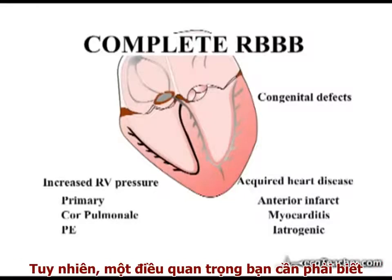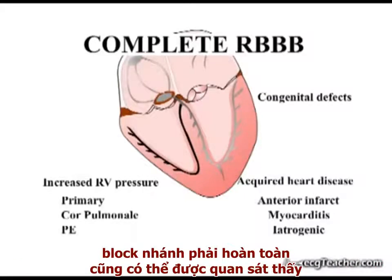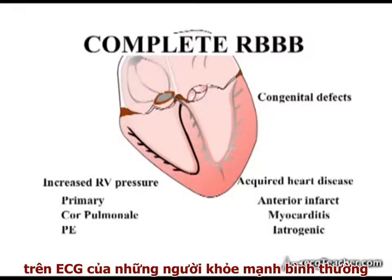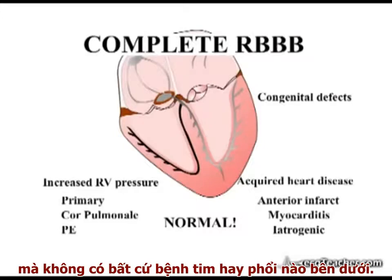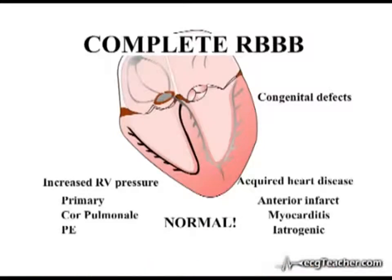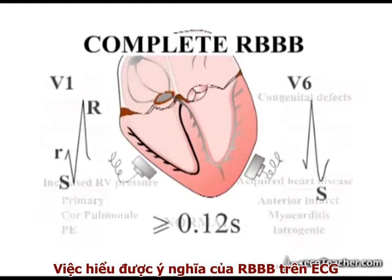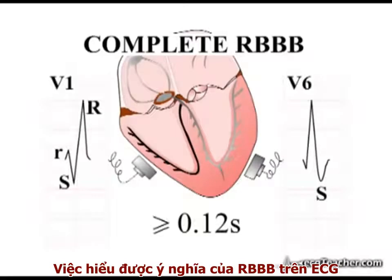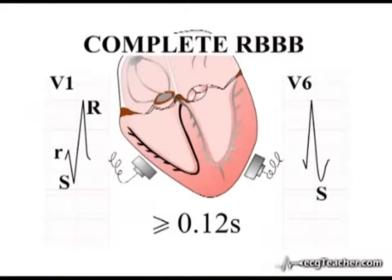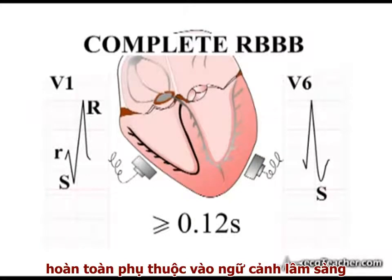However, it is important to realise that complete right bundle branch block is also observed on the ECG of a proportion of healthy individuals with no underlying heart or lung problems. The interpretation of the significance of right bundle branch block on the ECG is completely determined by the clinical context.